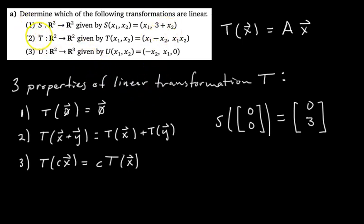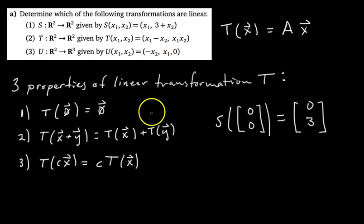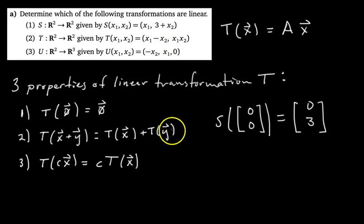What about the second transformation T? It also goes from R2 to R2. There's a big red flag right here: if you have components being multiplied together, if you see a component squared or something, it's probably not going to be linear. If you're running out of time you can just say it's not linear. But let's go through and be thorough and actually check.